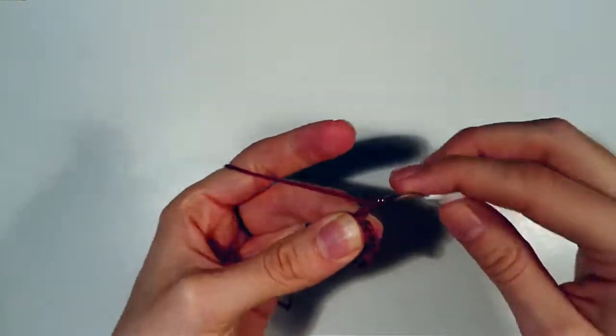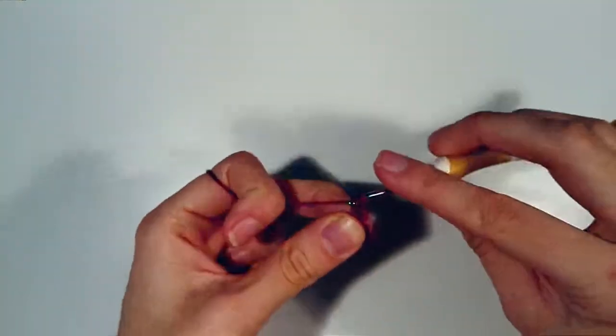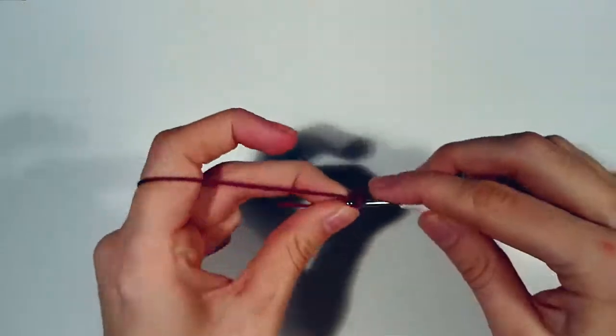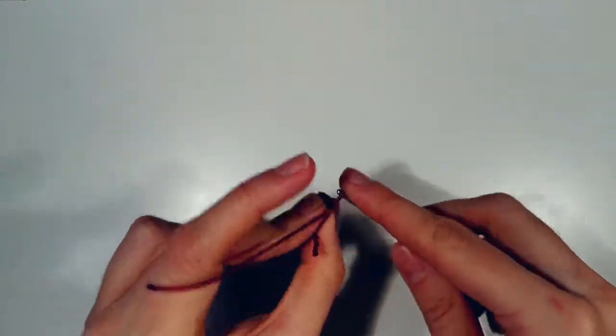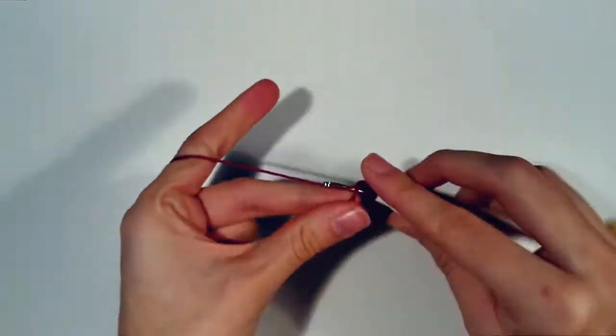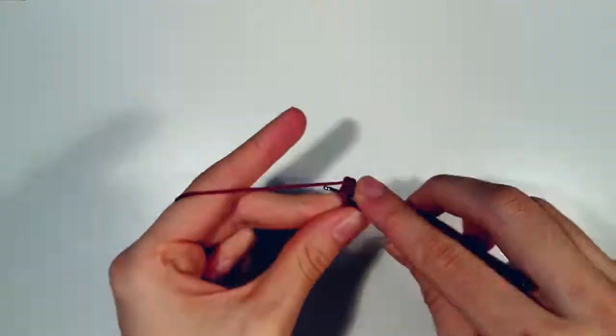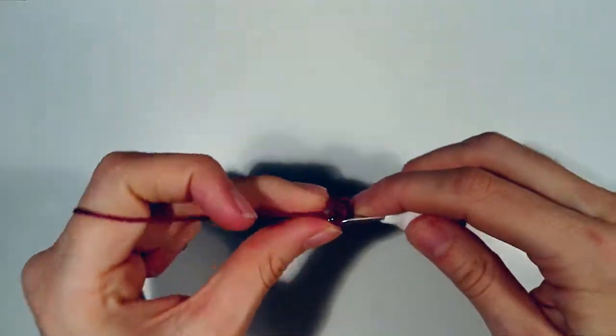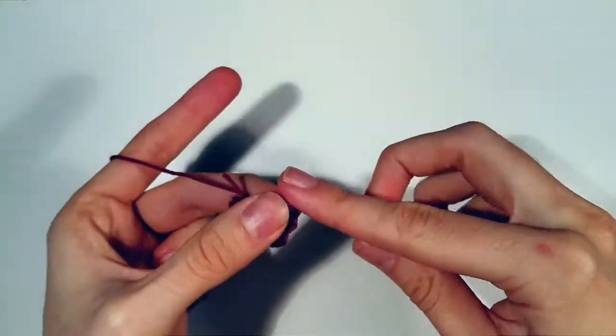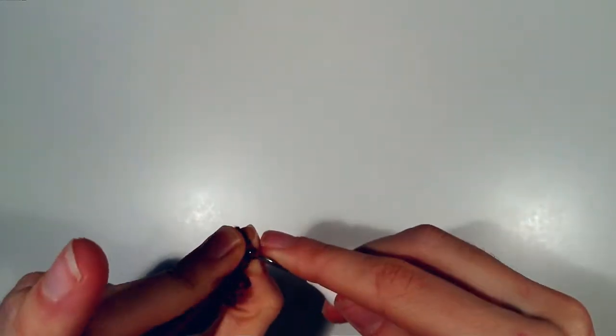So chain one, chain two, double crochet, chain one, chain two, slip stitch. Chain one, chain two, double crochet, chain one, chain two, slip stitch.